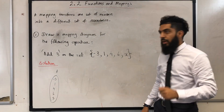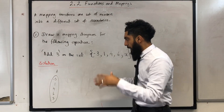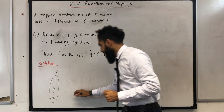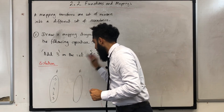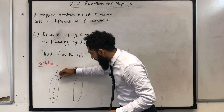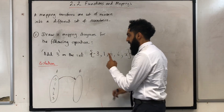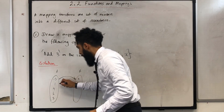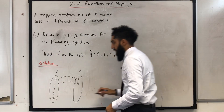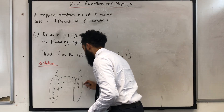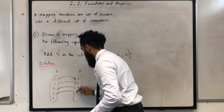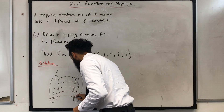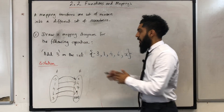The operation we're looking at is add 3. We're going to transform Set A into another set, Set B, under the operation add 3. So -3 becomes 0, because -3 + 3 = 0. Then 1 + 3 = 4, 4 + 3 = 7, 6 + 3 = 9, and x + 3 = x + 3. That completes the mapping diagram.